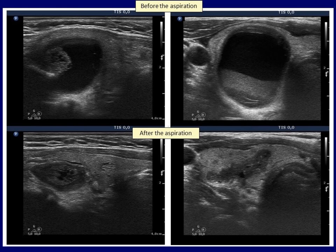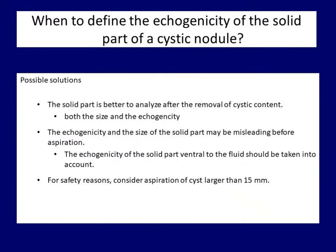The right case demonstrates another phenomenon: after aspiration of the fluid, the borders can occasionally become irregular. The importance of this change is not known, but in our experience, borders that become irregular after aspiration are of much less significance than irregular margins in general. It seems evident that the composition of the nodule should be defined before aspiration; however, it is better to judge the echogenicity after aspiration. If we must define echogenicity before aspiration, we should consider those parts of the solid portion located ventral to the cystic fluid.